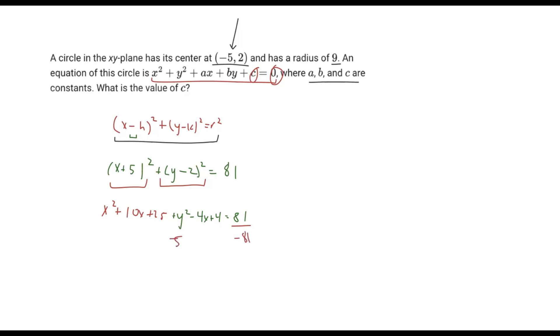Once we subtract 81 on both sides, we just want to combine like terms. We have a positive 25 here, a positive 4 here, and then a negative 81 here. So here we just have 29 minus 81, and 29 minus 81 will give us a value of negative 52. Therefore, we can determine that the value of c here is just going to be negative 52.